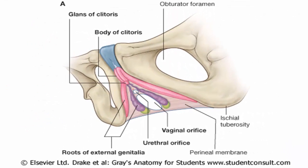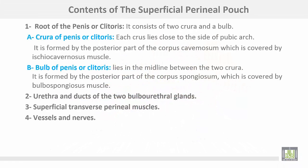The superficial perineal pouch is closed posteriorly and open anteriorly. The contents include the root of the penis or clitoris, consisting of two crura and a bulb. Each crus lies close to the side of the pubic arch and is formed by the posterior part of the corpus cavernosum, covered by the ischiocavernosus muscle. The bulb of the penis or clitoris lies in the midline between the two crura and is formed by the posterior part of the corpus spongiosum, covered by the bulbospongiosus muscle.